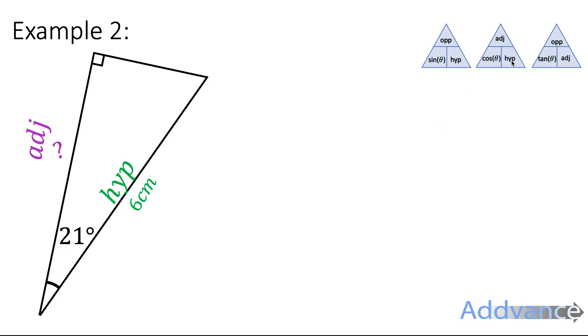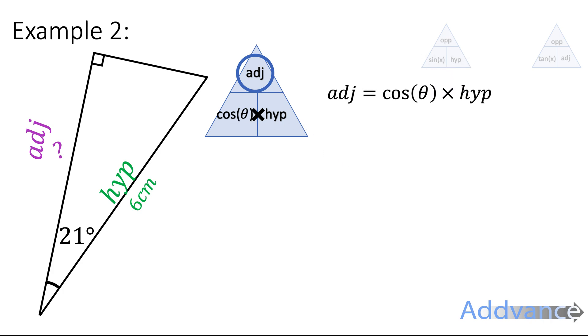CAH. The other triangles use opposite and opposite, and we're not interested in opposite today. Just cos, adj, and hyp. So we take this triangle, this is the one we use, and the adjacent is given by cos of the angle times the hypotenuse. Adj equals cos of the angle times the hyp.